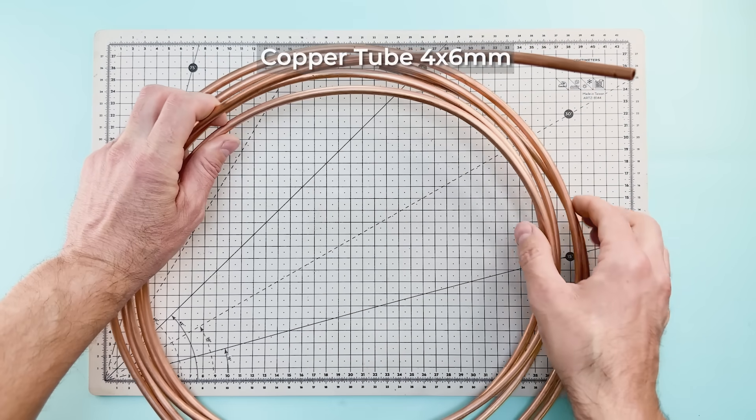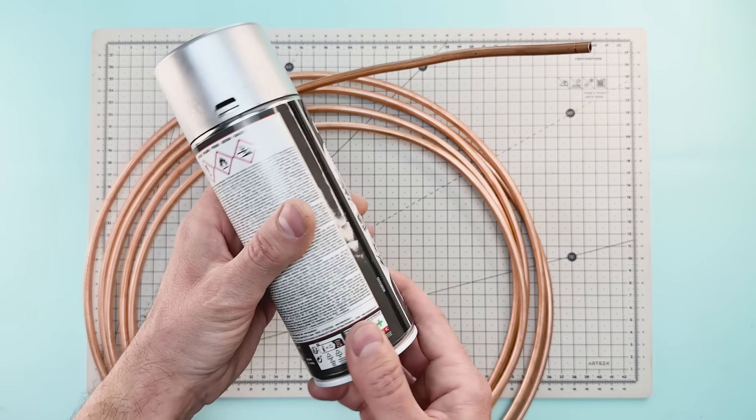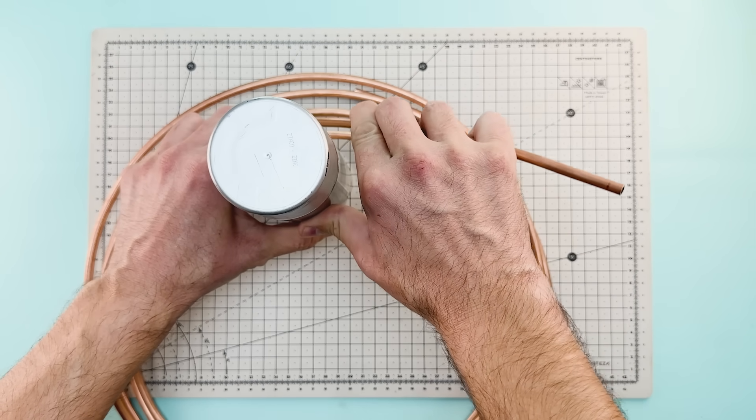To begin, we'll need a copper tube with a 4 by 6 millimeter diameter. Using something round like this paint can, we'll bend the copper into a spiral.